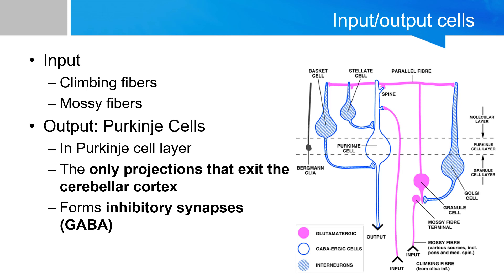The Purkinje cells provide the only output, which is an inhibitory impulse, and these impulses will either go to vestibular or deep cerebellar nuclei.